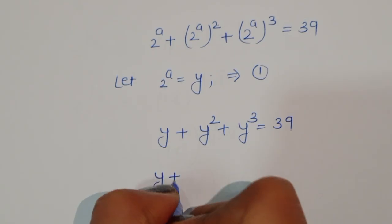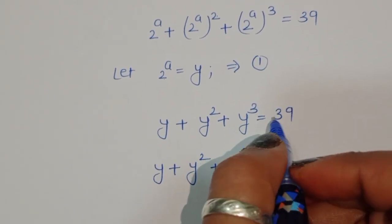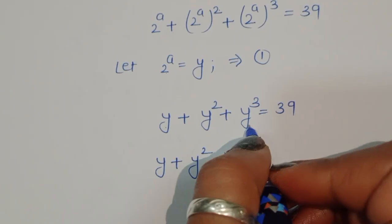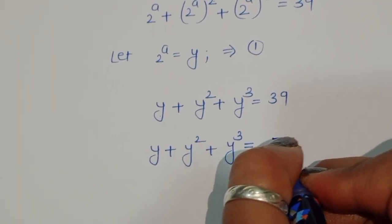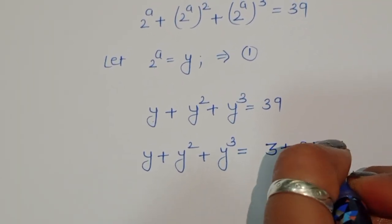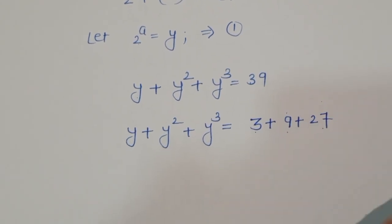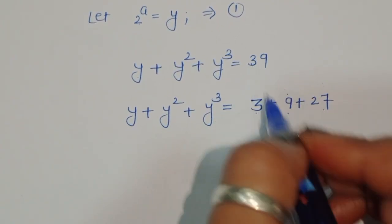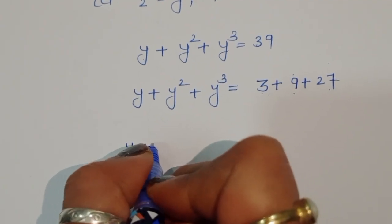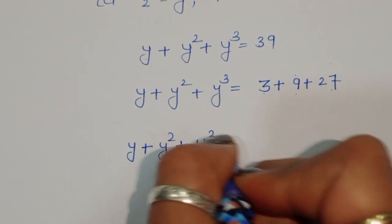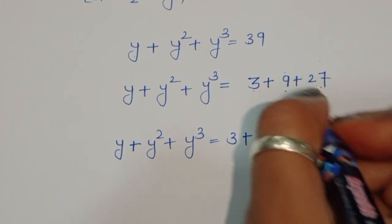Now, y plus y square plus y cube is equal to 39. We have to convert 39 in the form of a number plus its square plus its cube. We can write 39 as 3 plus 9 plus 27, because 3 plus 3 square plus 3 cube equals 3 plus 9 plus 27 equals 39. So we write y plus y square plus y cube equals 3 plus 3 square plus 3 cube.